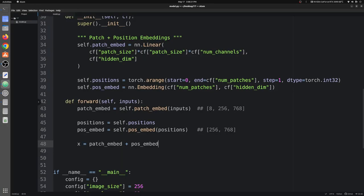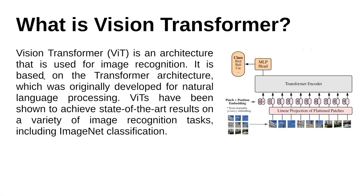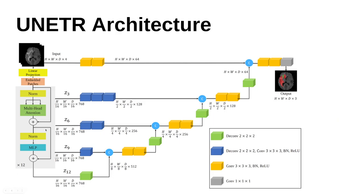Looking at the diagram, there are skip connections used in the CNN decoder: Z3, Z6, Z9, and Z12. Since we have 12 layers in our ViT architecture, we need to save the output of layers 3, 6, 9, and 12. Note that in programming indices start from 0, so don't confuse the 1-based indexing in the diagram with 0-based code indexing.